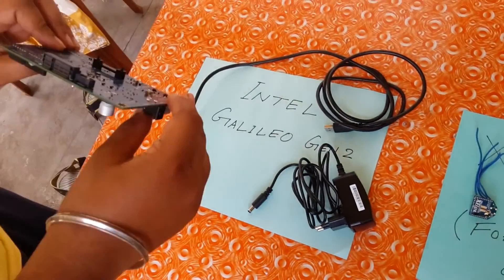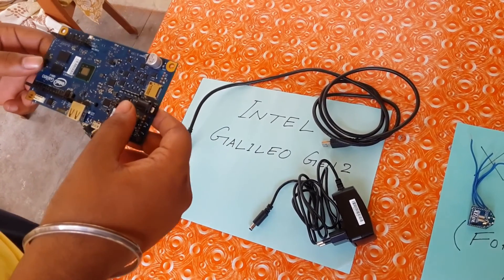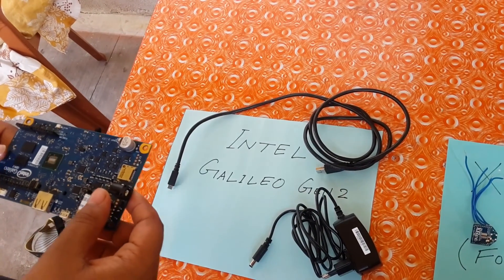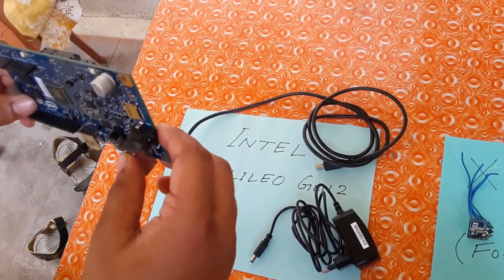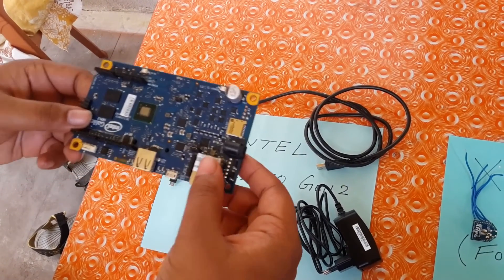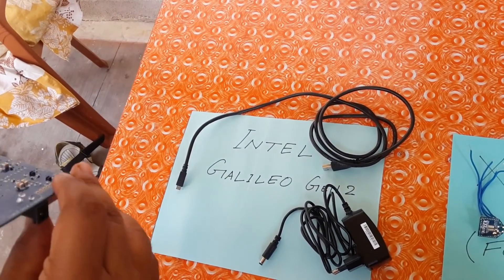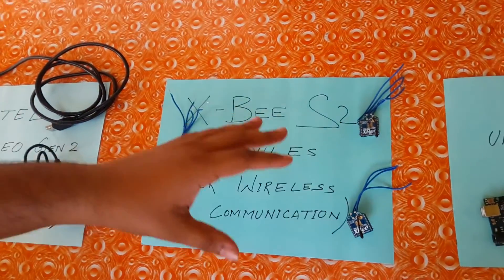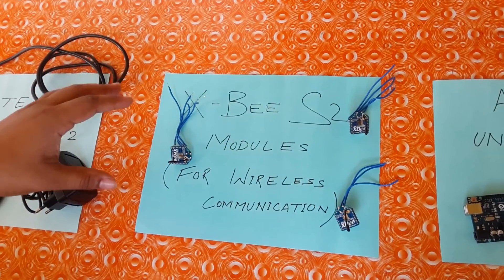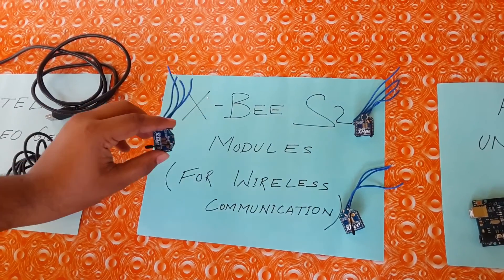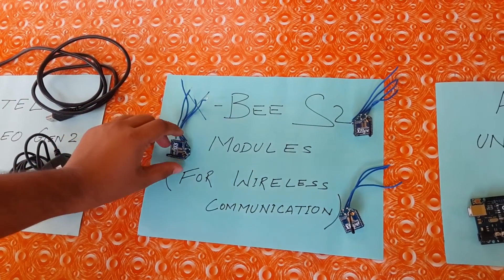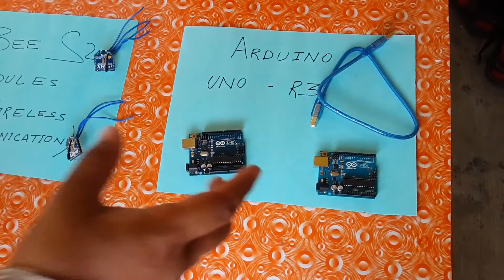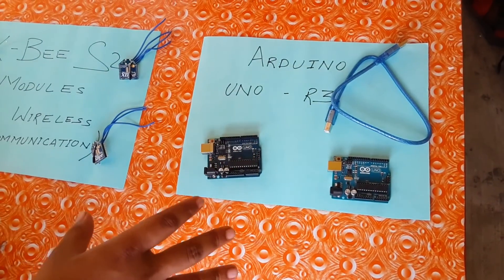First we consider the Intel Galileo board. It is one of the very powerful boards — you can see one of the boards that I am having in my hand. It can be interfaced with many modules. In our prototype we are using the board as a server which can communicate to the traffic lights connected to the Arduino Uno boards using the Zigbee modules. These Zigbee modules act as wireless connectivity between the Intel Galileo and the Arduino Uno boards.